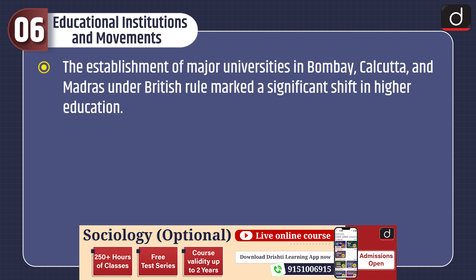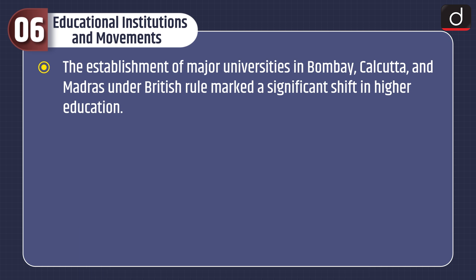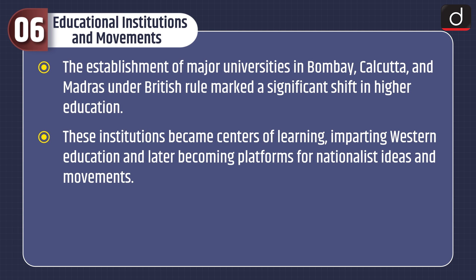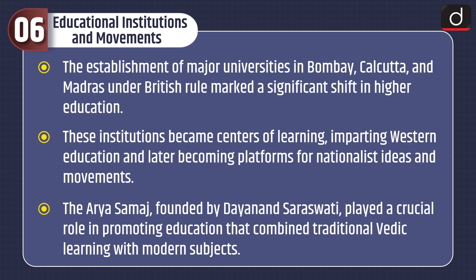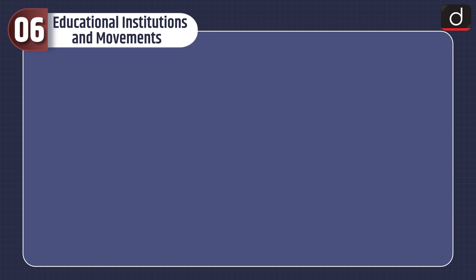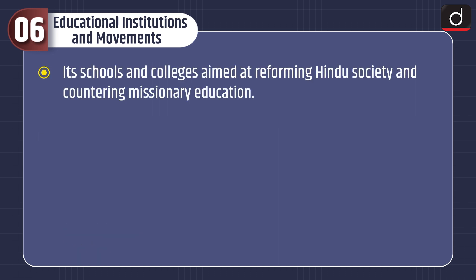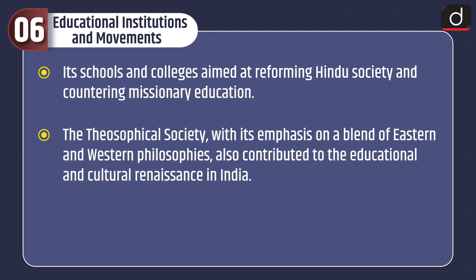Educational Institutions and Movements. The establishment of major universities in Bombay, Calcutta, and Madras under British rule marked a significant shift in higher education. These institutions became centres of learning, imparting Western education, and later becoming platforms for nationalist ideas and movements. The Arya Samaj, founded by Dayanand Saraswati, played a crucial role in promoting education that combined traditional Vedic learning with modern subjects. Its schools and colleges aimed at reforming Hindu society and countering missionary education. The Theosophical Society, with its emphasis on a blend of Eastern and Western philosophies, also contributed to the educational and cultural renaissance in India.